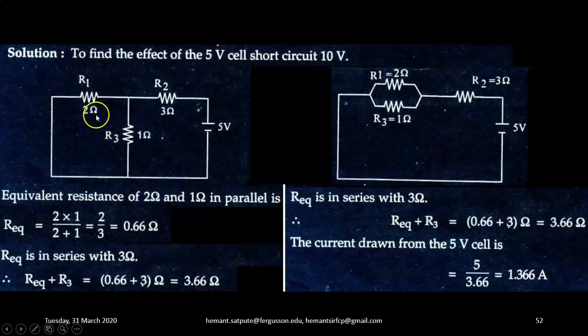Now this equivalent resistance will be in series with R2. So R equivalent plus R3, that combination works out to be 3.66 ohm. So that is the effective resistance. Now this R equivalent is in series. The current drawn from the cell 5 volt will be equal to total voltage upon total resistance. So 5 upon 3.66 that comes out to be 1.366 ampere. So that is the current.